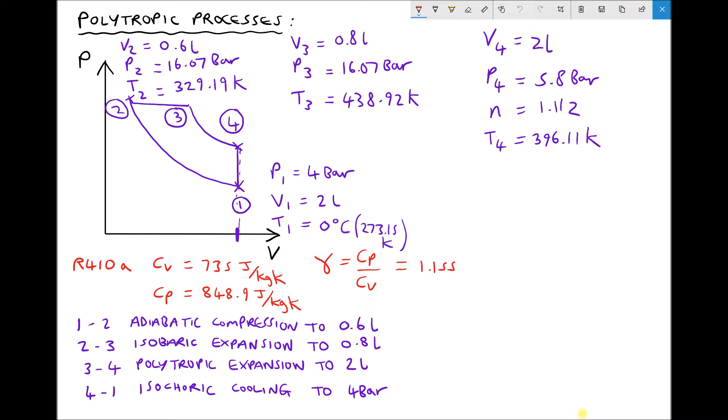Now by convention, if work is being done which we could call work in, W in, then that's actually positive work. And if work's coming out or work's being done by the gas on the surroundings, then work out or W out is actually negative by convention. And we'll see that this is the case as we calculate the work moving between each of these positions.